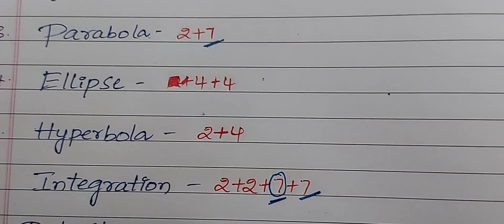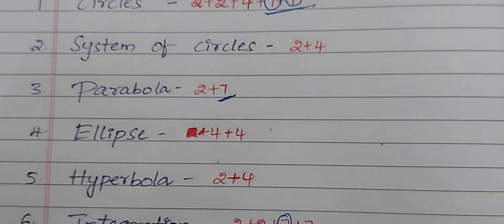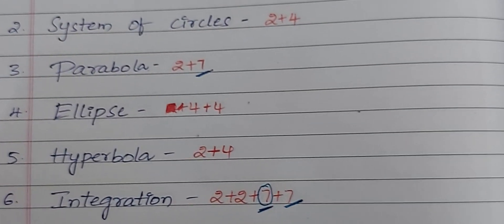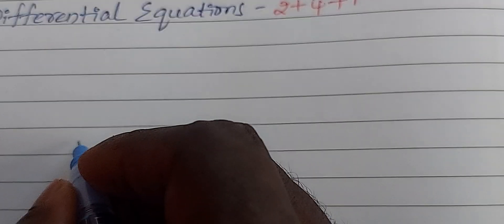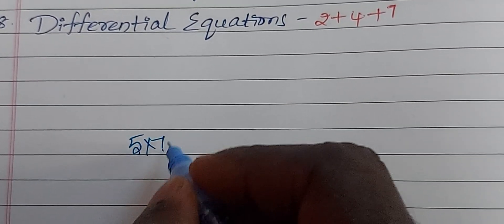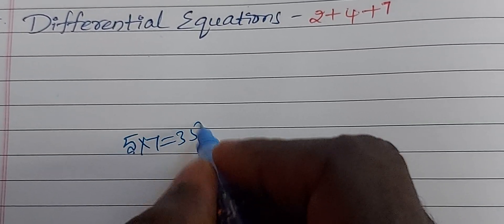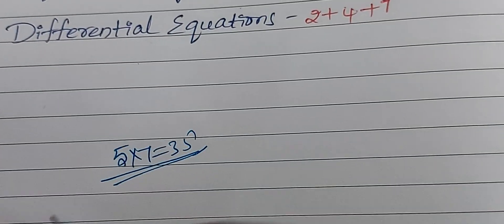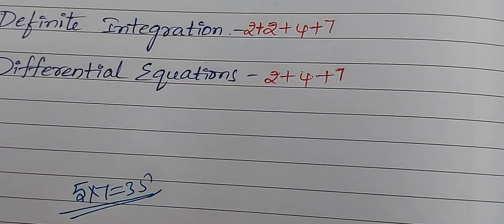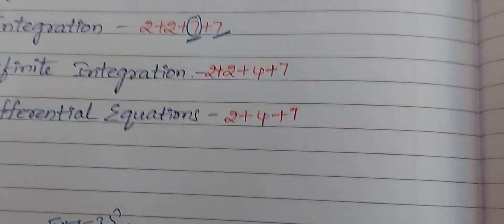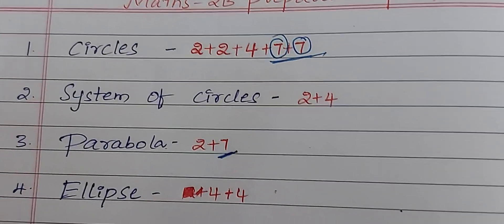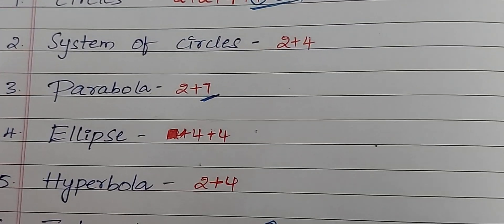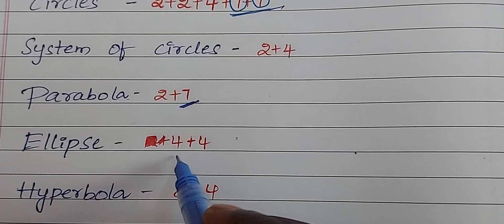Parabola and Integration — these 5 seven-mark questions are compulsory. Total you have 5 seven-mark questions, and 5 × 7 = 35 marks. So more than a pass mark — this is compulsory. Next, you have 4-mark questions: if you have 2 four-mark questions.